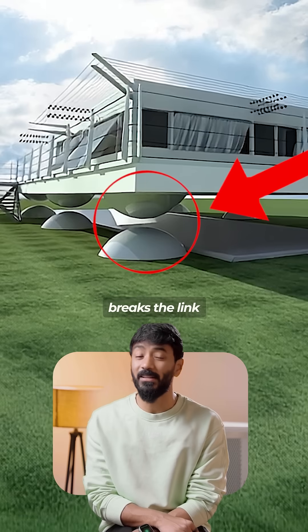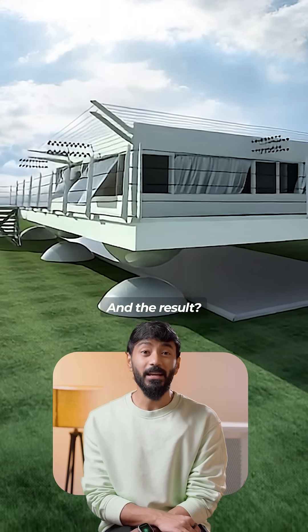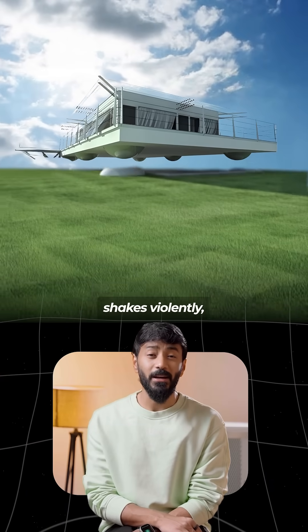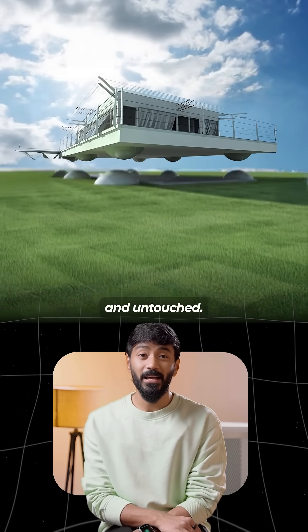That tiny gap completely breaks the link between the ground and the building. And the result? While the earth shakes violently, the house remains stable and untouched.